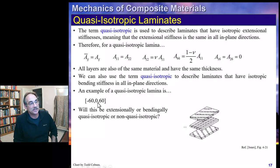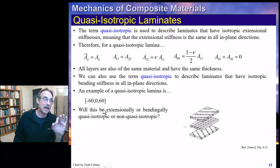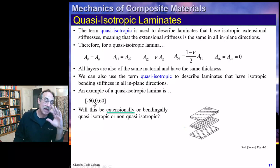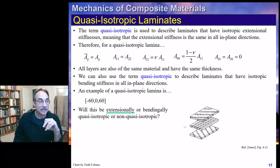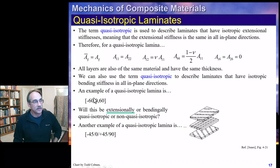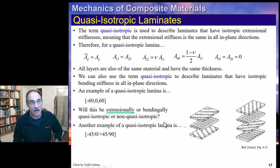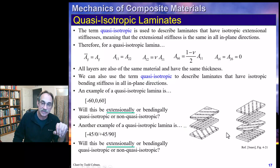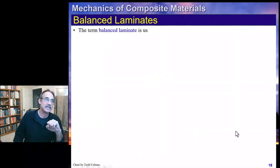For example, a minus 60, zero, plus 60 laminate is extensionally quasi-isotropic but not quasi-isotropic in bending, because while we have a positive and negative 60, the negative sign means it does not act like an isotropic material for bending, but the 60s cancel out for extension. Similarly, a minus 45, zero, plus 45, 90 laminate is also extensionally quasi-isotropic.